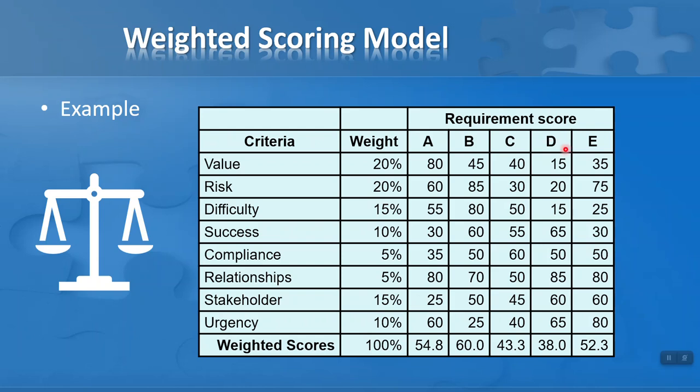As I did with the simple exercise, I score each of the five requirements based on each criteria. I won't go through every single one, but let's look at value, which has a weighting of 20%. Requirement A scores 80 out of 100, B scores 45, C scores 40, D scores 15, and E scores 35. Based on value alone, we would choose requirement A because it has a much higher score than the others. We do the same for all other criteria: risk, difficulty, and so on, all the way down to urgency.